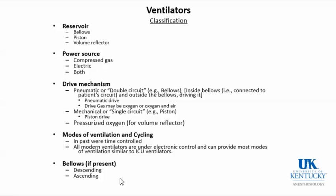Ventilators can be classified by the type of reservoir. There are two that we commonly use — bellows and piston — and a rare one called the volume reflector, which I mentioned for completeness but we don't use, and it's somewhat confusing.